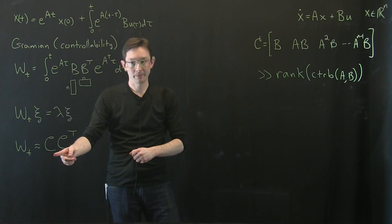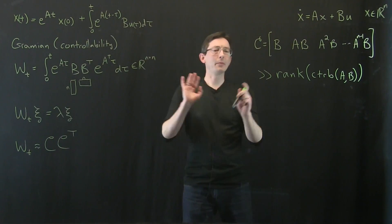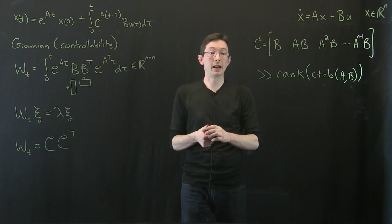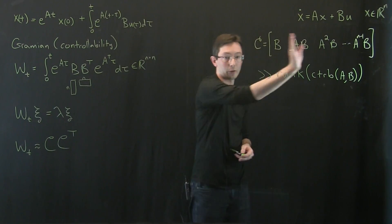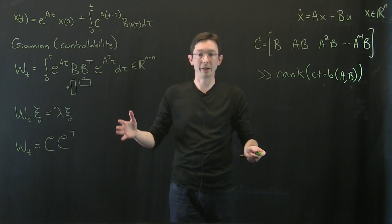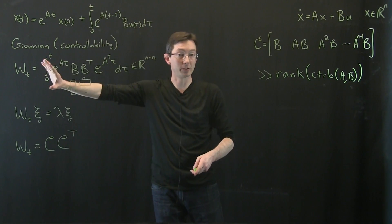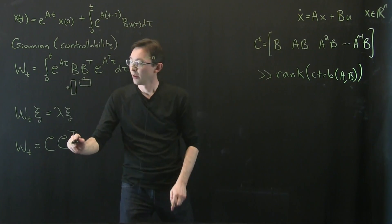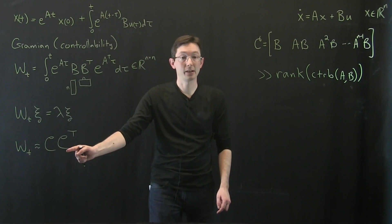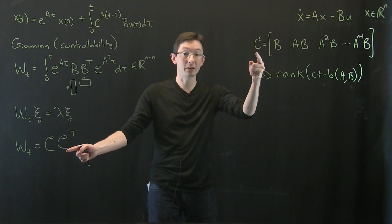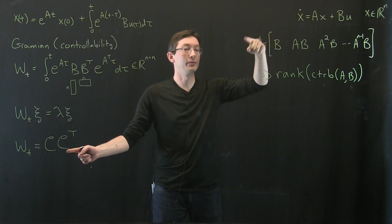Or like this impulse response matrix where I kick the system and I measure it for a long time. This is almost equal to this, and we're going to have a whole lecture on this down the road where we talk about these empirical Gramians that we measure from impulse response data, and we're going to talk about these eigenvectors in much, much more detail. I'm just giving you the high-level overview.